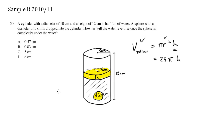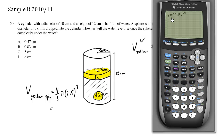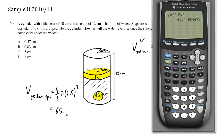The volume of the yellow portion equals the volume of the sphere. The formula for the volume of a sphere is 4 over 3 times pi times R cubed. For this sphere, the radius is 2.5 centimeters. So the volume equals 4 over 3 times pi times 2.5 cubed, which equals approximately 65.4498 cubic centimeters.